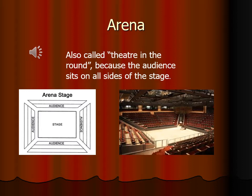There are advantages and disadvantages to arena staging. Comparative element number one — a great advantage — is that this is a very intimate space. Because there are no walls and most of the audience sits closer to the actors, it gives the audience a sense of being in the same room as the actors. You can see facial expressions with greater ease. Number two, however, can be a disadvantage: you cannot have anything on one side that obstructs the view of the audience, so you really can't have walls, doors, or solid obstructions.